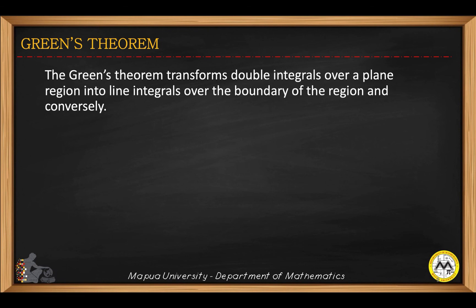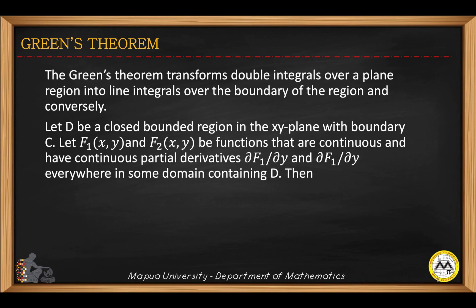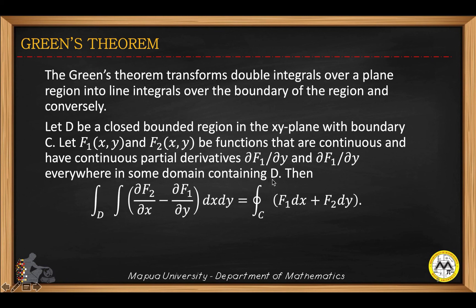Green's theorem transforms a double integral over a plane region into line integrals over the boundary of the region, and vice versa. D is a closed bounded region in the xy-plane with boundary c. F1 and F2 are two functions that are continuous and have continuous partial derivatives everywhere in the domain containing d. The theorem then gives the expression relating the double integral to the line integral.